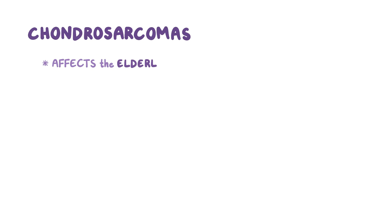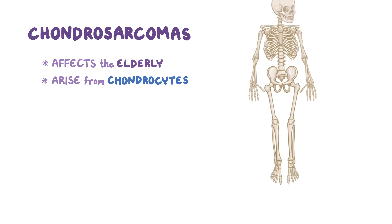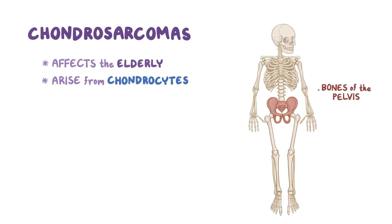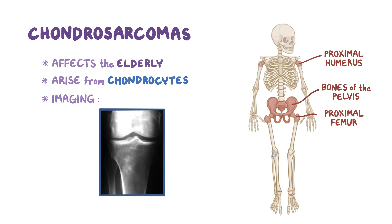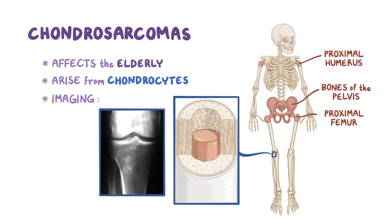Finally, there are chondrosarcomas, which tend to affect the elderly. Chondrosarcoma arises from chondrocytes, which are cartilage-producing cells. Chondrosarcoma mainly affects bones of the pelvis, but can also affect long bones like the proximal femur and proximal humerus. On imaging, the mass is typically within the medullary cavity.